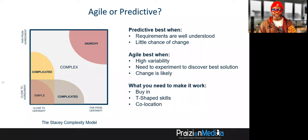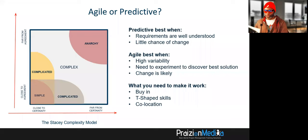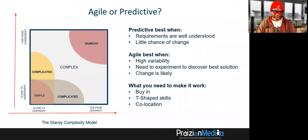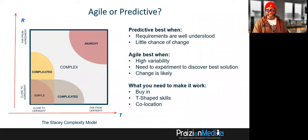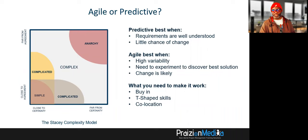On page 14, we have requirements uncertainty on one axis and technical degree of uncertainty on the other — the Stacey complexity model. When you are far from certainty, you find yourself in the zone of anarchy, moving from complexity into anarchy — that's a perfect place to use Agile. Agile works best when there's high variability, a need to experiment to discover, and change is likely. Predictive in the simple zone works best when requirements are well understood. Another key part of PMI's Agile Practice Guide is the continuum of life cycles, showing when to use predictive (low degree of change, low frequency of delivery) and when to use Agile (high degree of change, high frequency of delivery).